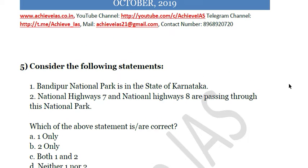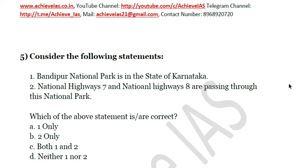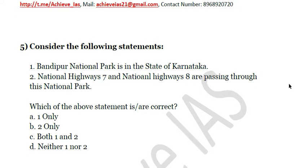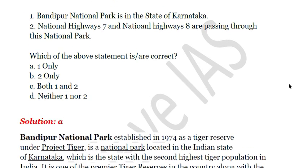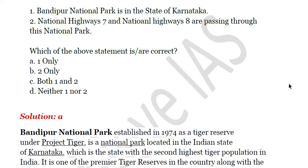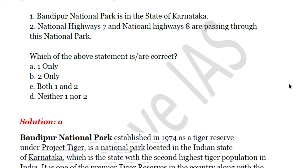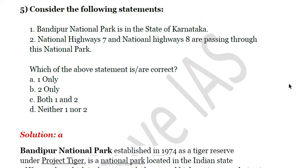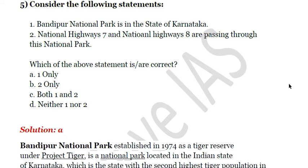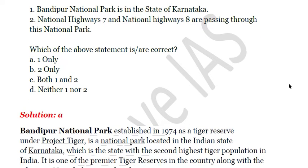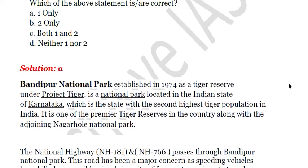The next question: consider the following statements. First, Bandipur National Park is in the state of Karnataka. Second, National Highway 7 and National Highway 8 pass through this national park. Which of the above statements is correct? Only the first statement is correct — Bandipur National Park is in Karnataka. It was recently in the news because the Kerala CM requested the Union Minister for Highways to open night traffic on the highway passing through Bandipur National Park.